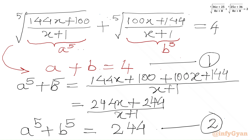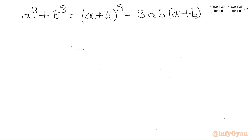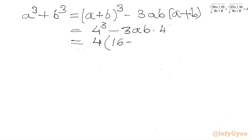Now I will calculate A cubed plus B cubed first using the identity: A cubed plus B cubed equals (A plus B) cubed minus 3AB times (A plus B). We can take 4 common out, so in the bracket we write 16 minus 3AB. Let us call this equation number 3.